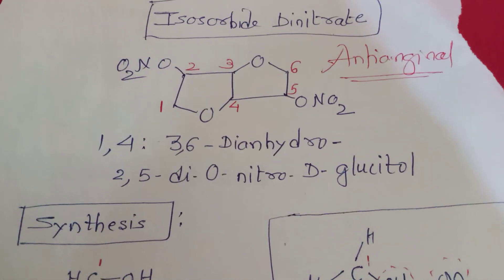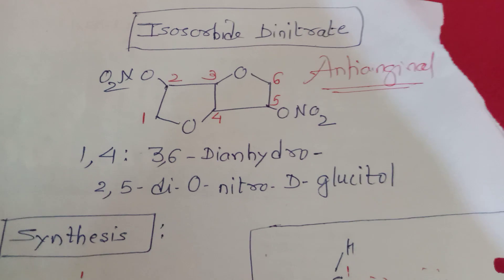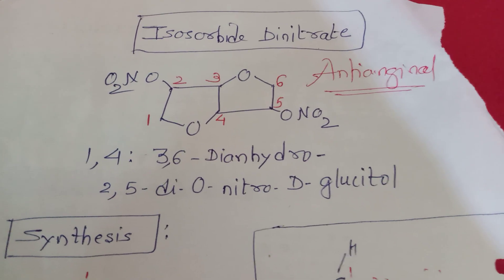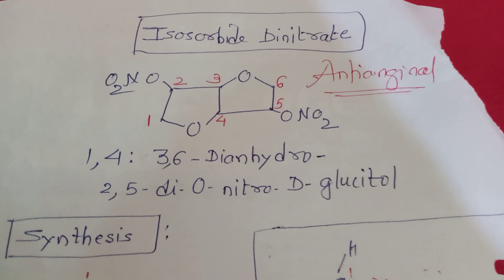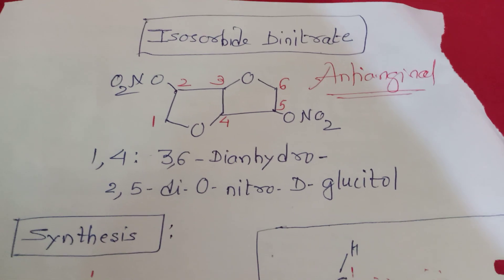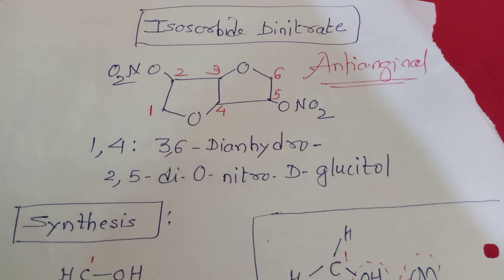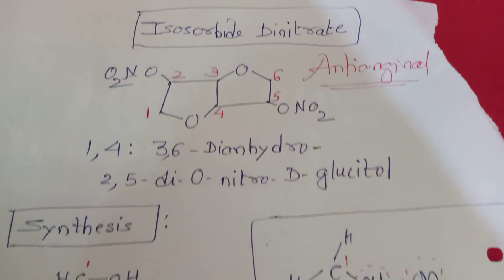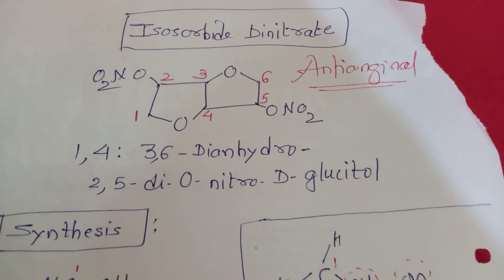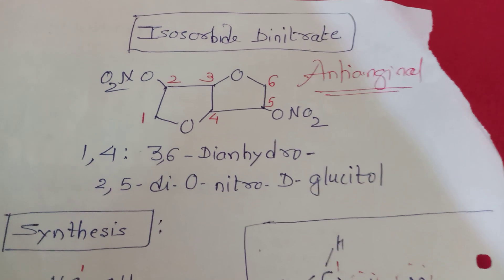The IUPAC name of this compound is 1,4:3,6-dianhydro-2,5-di-O-nitro-D-glucitol.